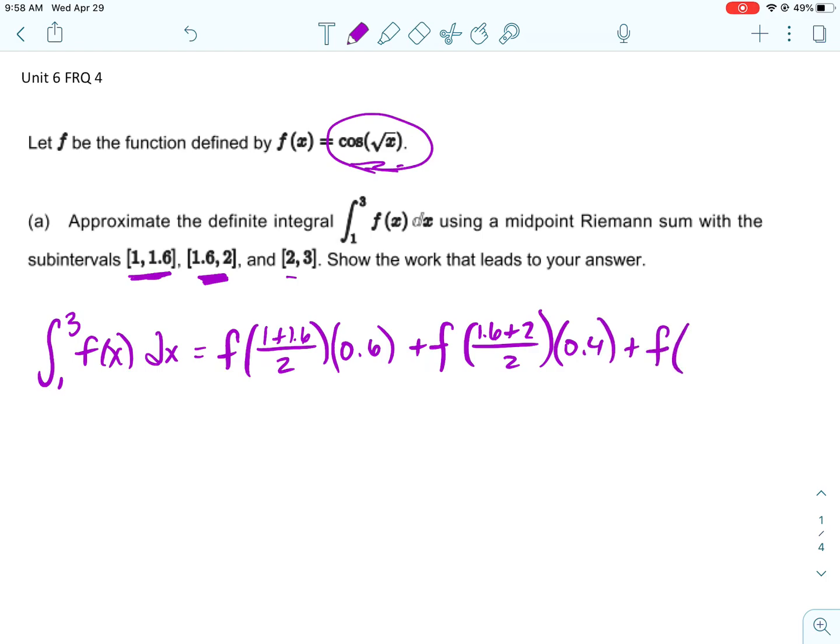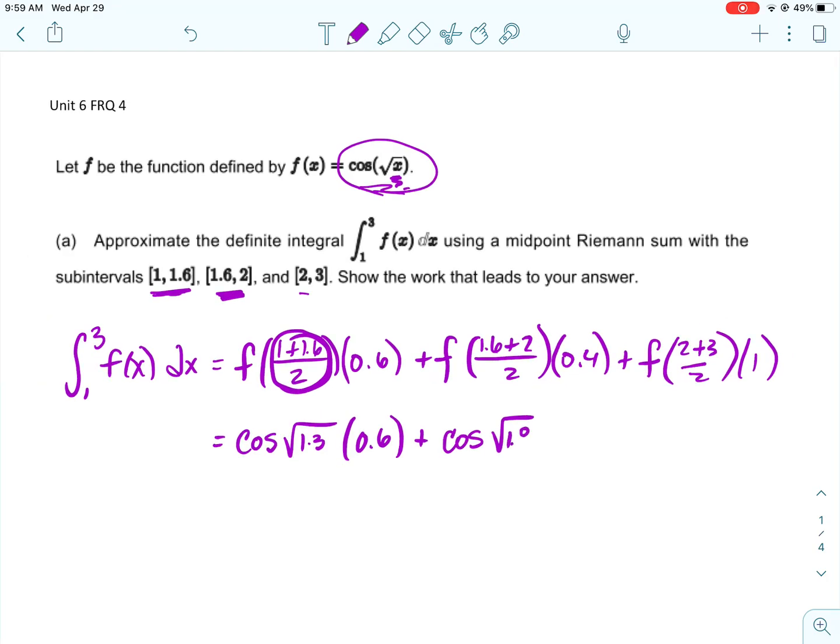To find the midpoint between two values you add them together and divide by 2. So that's gonna be the height of the rectangle and then the width is gonna be the difference between 1 and 1.6 which is 0.6. And we'll do that for each of these. So we want to find the midpoint between 1.6 and 2. We add them together and divide by 2 and then we're going to multiply that by the distance between 1.6 and 2 which is 0.4. And then one more time we're gonna add 2 and 3 and divide by 2. That one we probably could have done in our head. And then the width of that rectangle would be 1.